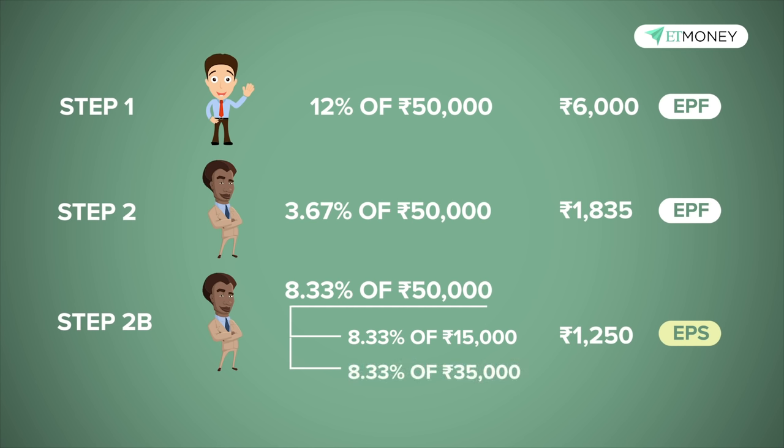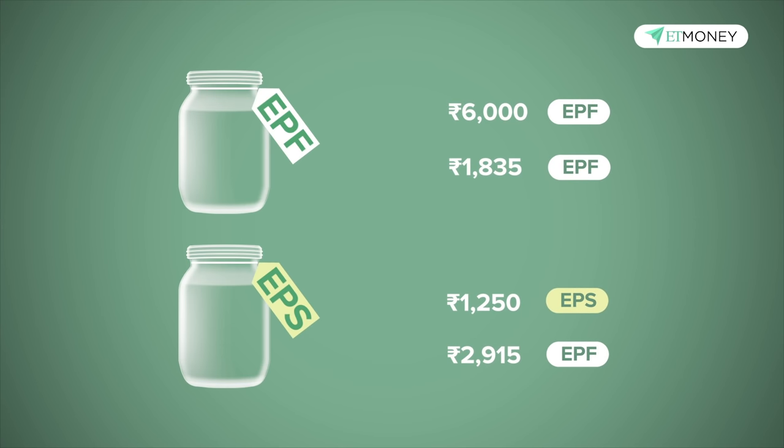What happens to the rest — that is 8.33% of Rs. 35,000? That amount, which comes to Rs. 2,915, will be added to the employer's contribution towards EPF. So the total employer's contribution towards EPF comes to Rs. 1,835 plus Rs. 2,915, which totals Rs. 4,750. Net-net, 24% of Rs. 50,000 — which is Rs. 12,000 — is split as Rs. 10,750 into EPF and Rs. 1,250 into EPS in this particular case.